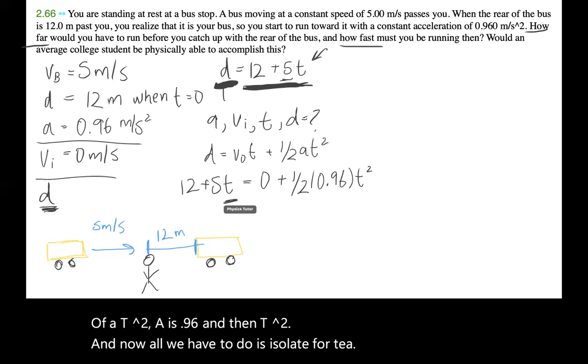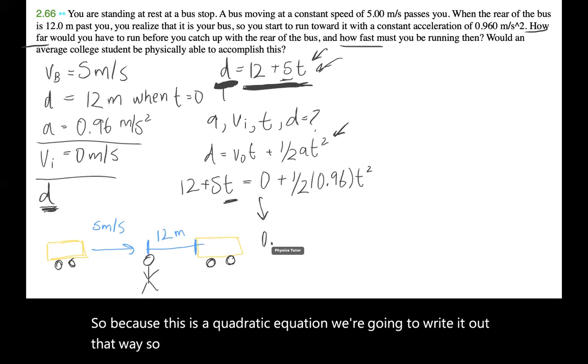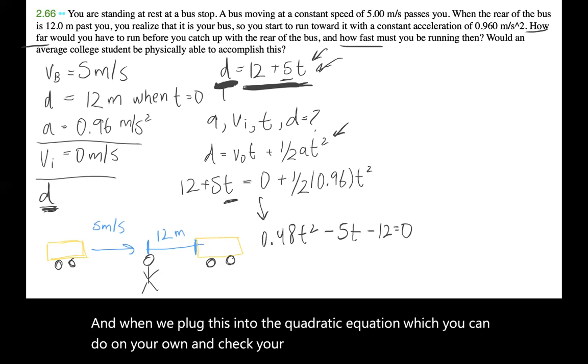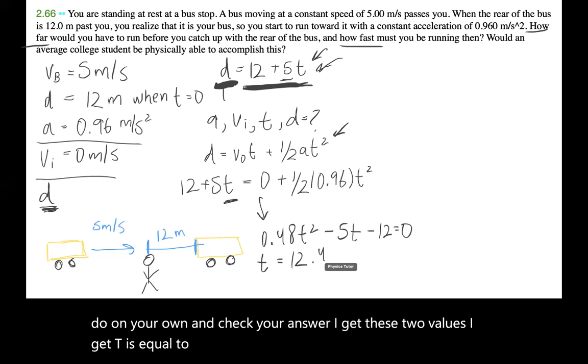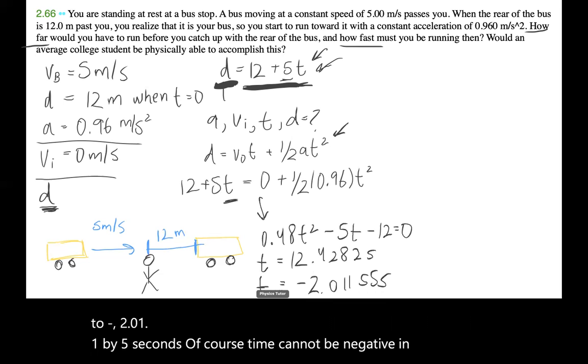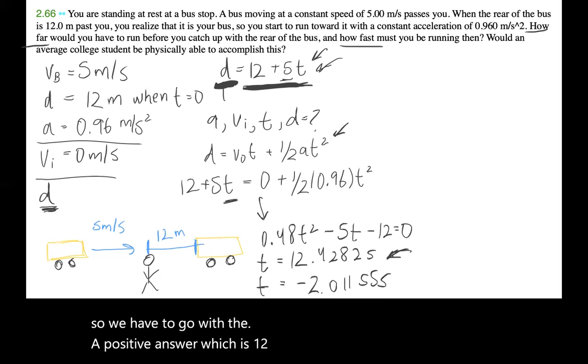So because this is a quadratic equation, we're going to write it out that way. So we have 0.48t squared minus 5t minus 12 equals zero. And when we plug this into the quadratic equation, which you can do on your own and check your answer, I get these two values. I get t equals 12.4282 seconds, and I'm also getting t equals negative 2.0115 seconds. Of course, time cannot be negative in this context, so we have to go with the positive answer, which is 12.428 seconds. And there we have time.